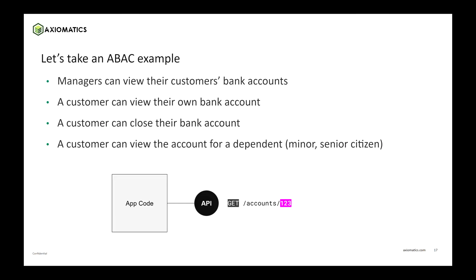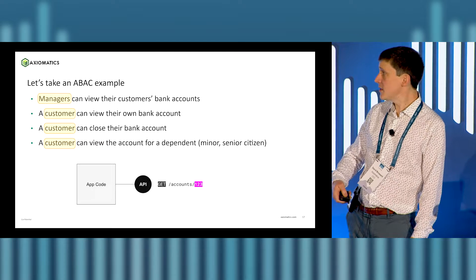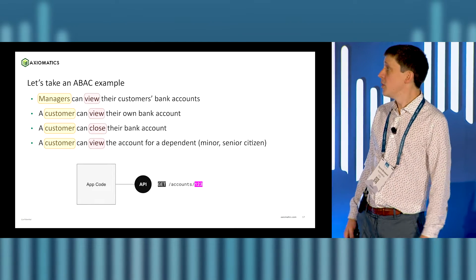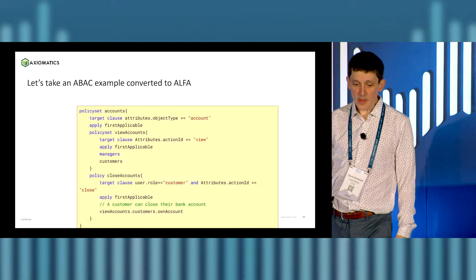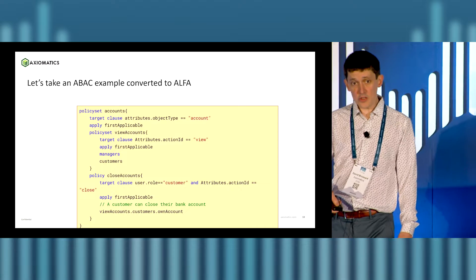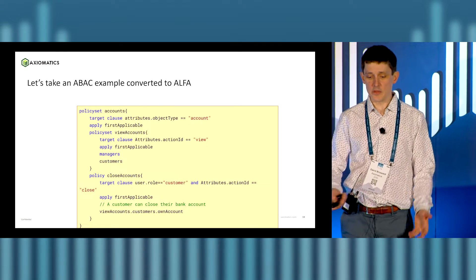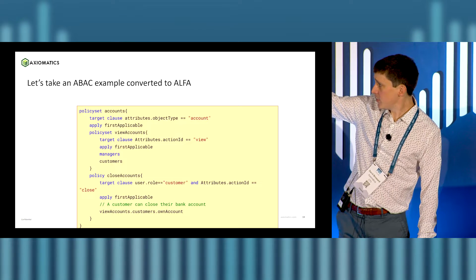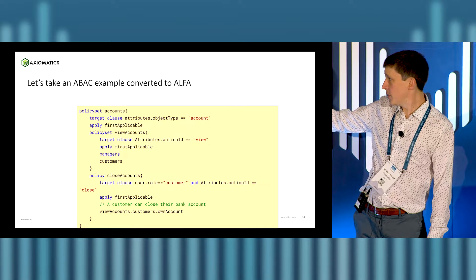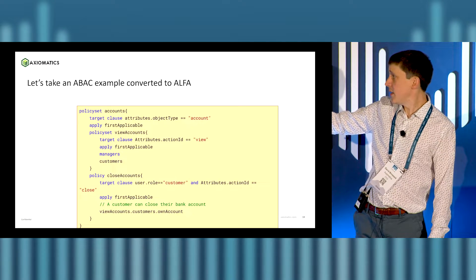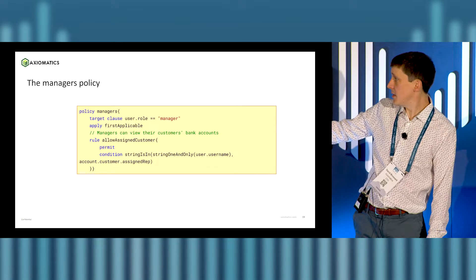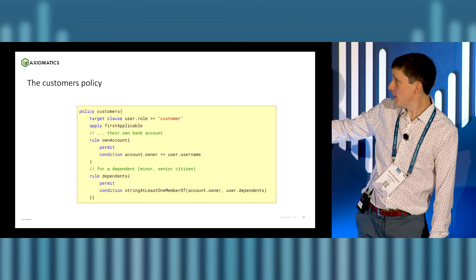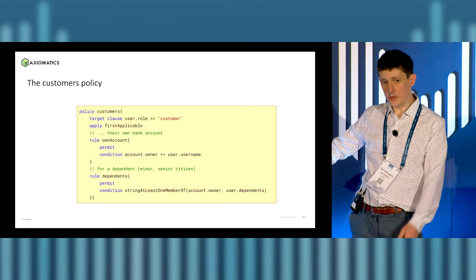If we break it down, this is what a plain English requirement would look like: managers can view their customers' accounts; a customer can view their own account. You highlight the key words: the role or title of the user, the action they want to do, and the object they want to get access to — bank account, medical record. This is what the policy looks like in Alpha. I have a policy specifying we're dealing with an account, the action is view, and then a manager policy and a customer policy — the manager policy looks at the role, and the customer policy checks the relationship, verifying that the username is in the list of assigned reps or checks ownership of the account.